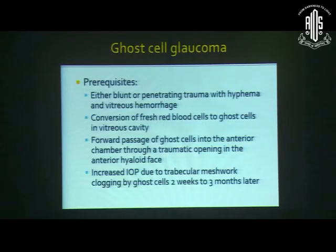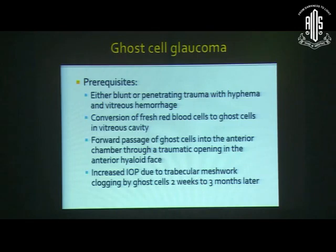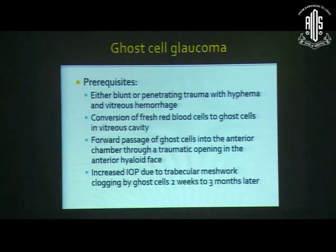Ghost cell glaucoma may occur after blunt or penetrating trauma with high hyphema and vitreous hemorrhage. Once the hyphema clears, conversion of fresh red blood cells to ghost cells occurs in the vitreous cavity. These ghost cells travel anteriorly into the anterior chamber through a traumatic opening in the anterior hyaloid face, resulting in increased IOP due to trabecular meshwork clogging — which can occur as soon as two weeks to three months later.